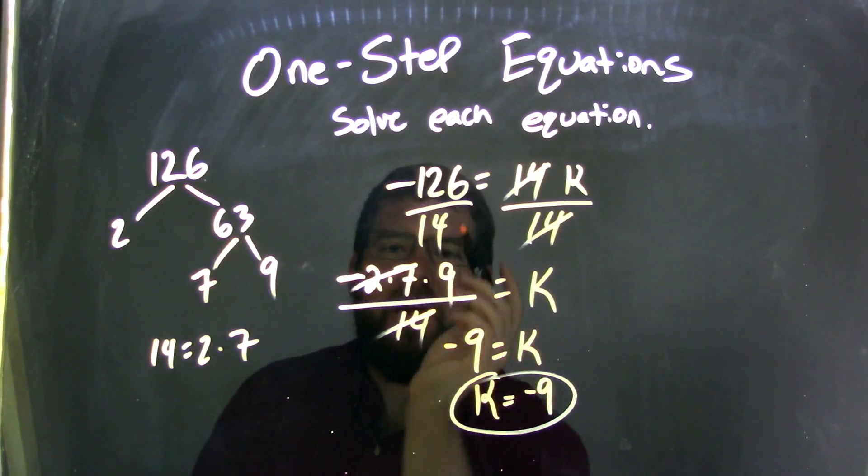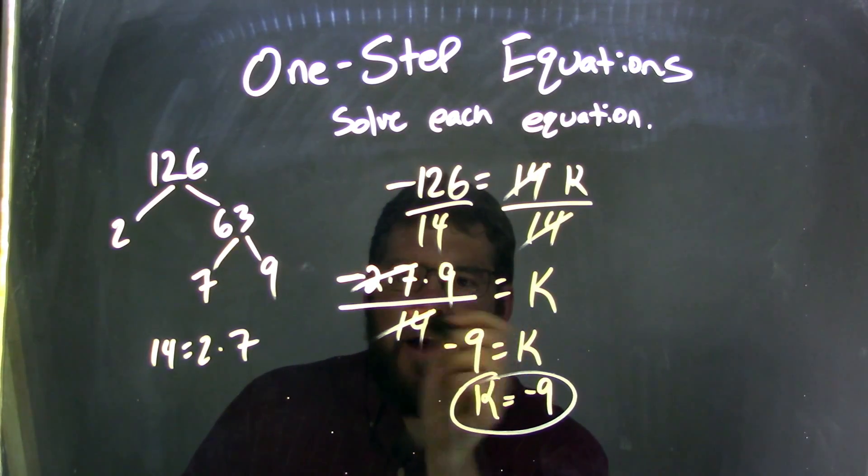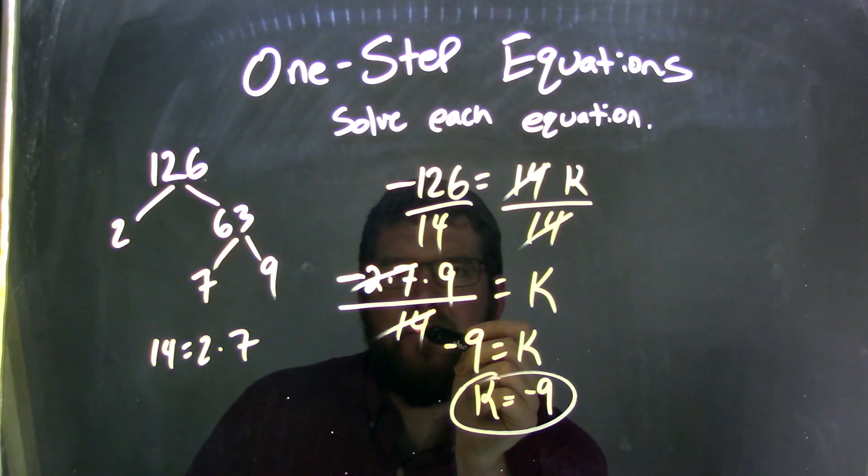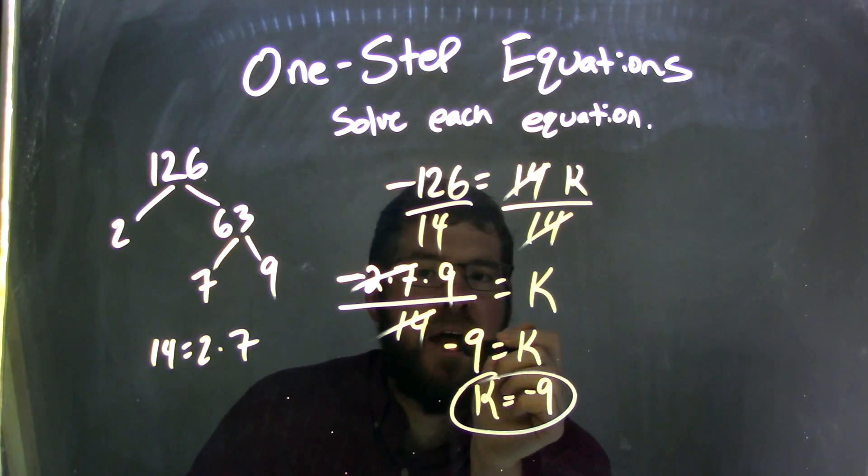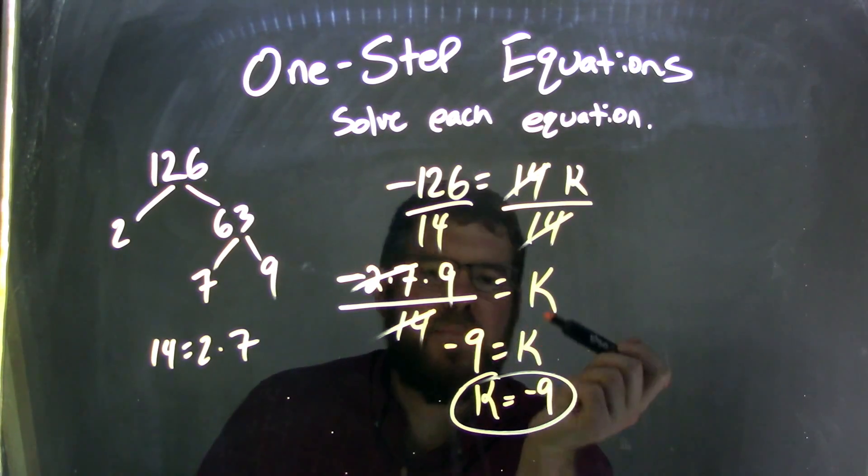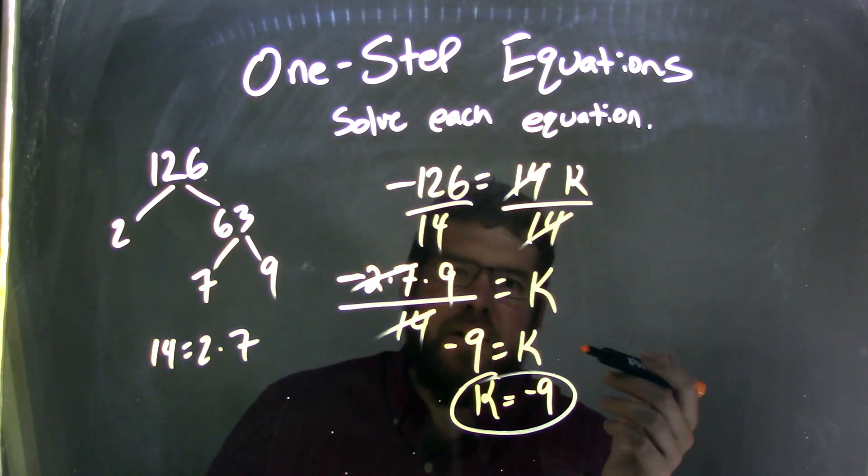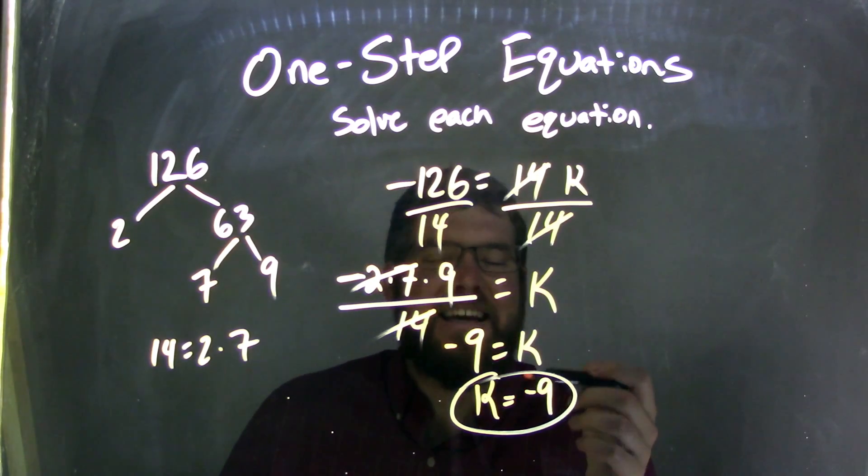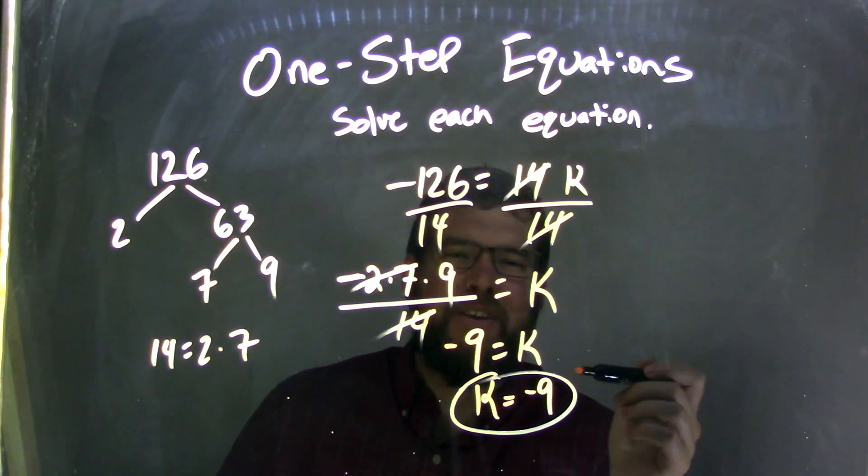So, I kind of stopped there. So, 2 times 7 times 9 all over 14. The 2 times 7 cancels with the 14 here in the division. So, now we're left with a negative 9. Don't forget that negative, right? A negative divided by positive is a negative. So, negative 9 equals K. Rearrange it. So, K comes first. So, our final answer here is K equals a negative 9.